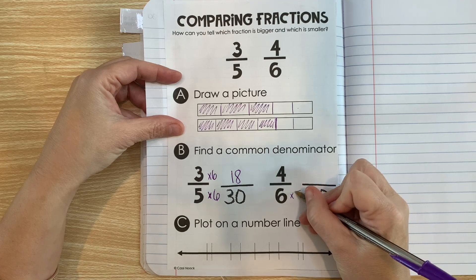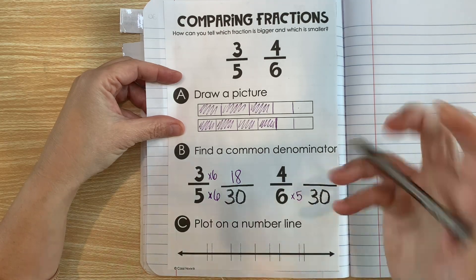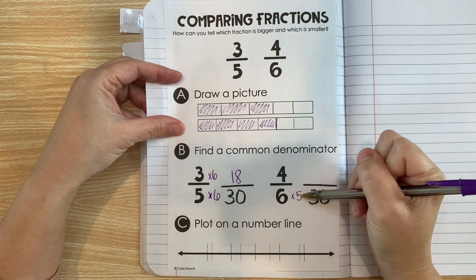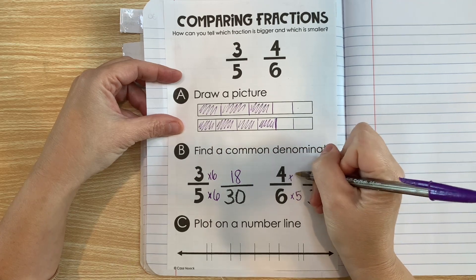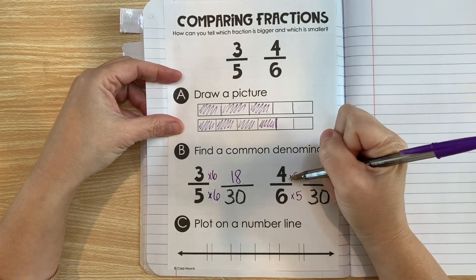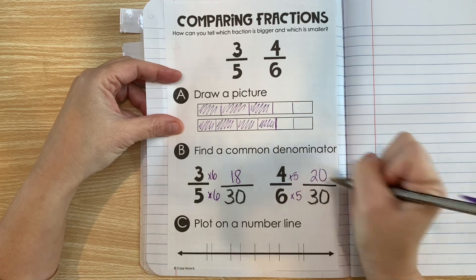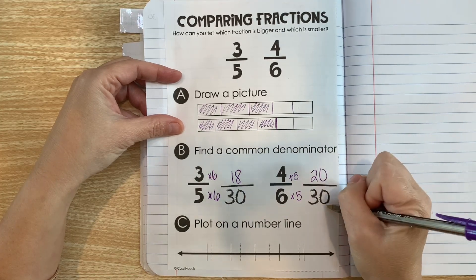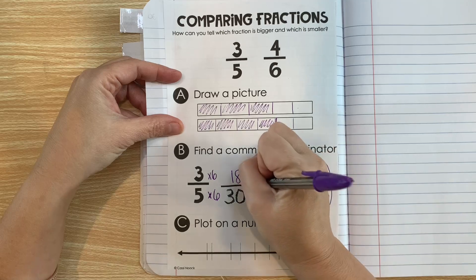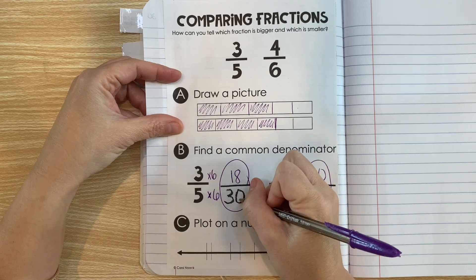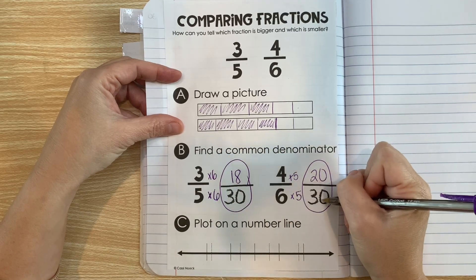Six times 5 is 30. So what we do to the bottom, we gotta do to the top. So 4 times 5 is 20.